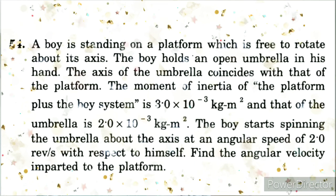Rotational Mechanics Numerical 54. A boy is standing on a platform which is free to rotate about its axis. The boy holds an open umbrella in his hand. The axis of the umbrella coincides with that of the platform.